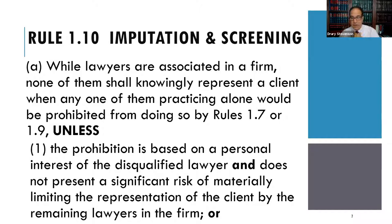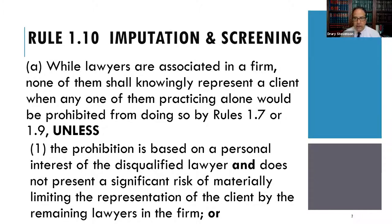If you have one of these larger-than-life personalities and you domineer everyone in the firm — totally overbearing so that anybody who represents an old enemy of yours is really going to pay for it — then there would be a material limitation imputed to the whole firm. That's the first part.